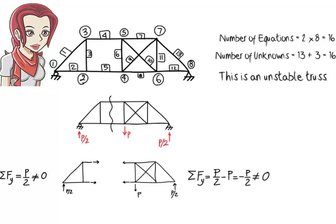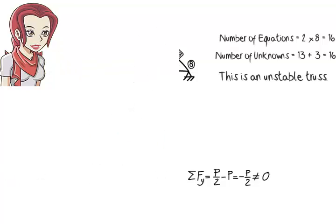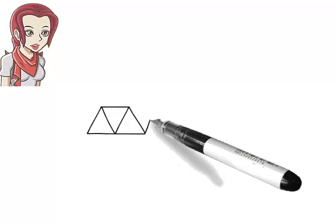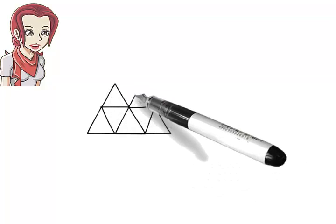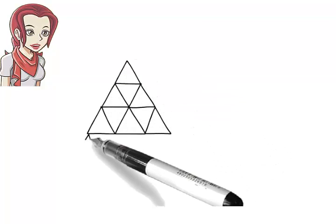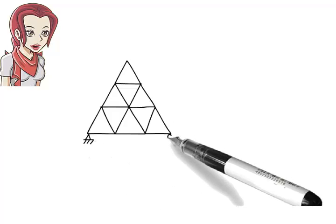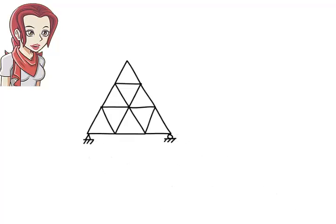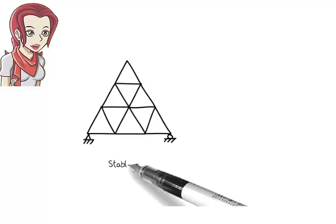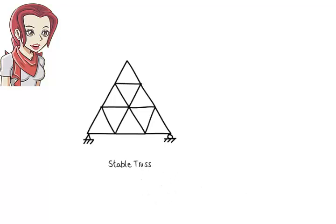As you can see here, determining the internal stability of trusses may not be a simple task. It may involve careful inspection of the geometry of the structure. Generally speaking, if the geometry of a truss consists entirely of simple triangles like this, then the structure is considered stable. Otherwise, the structure needs to be carefully inspected for geometric patterns that are inherently unstable.